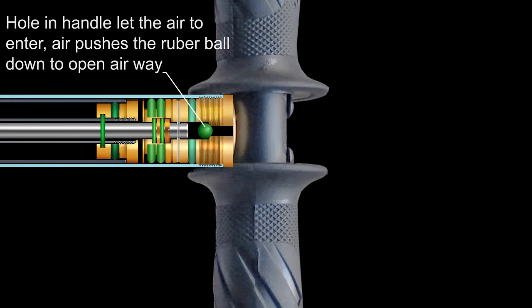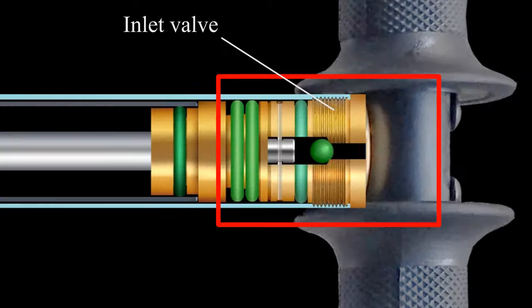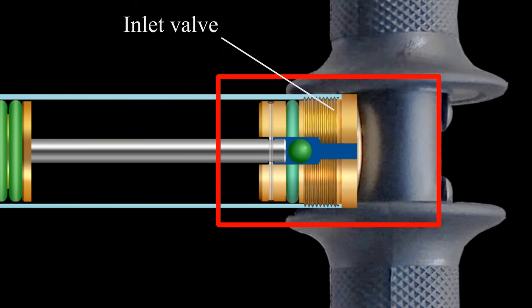When air enters, it pushes the rubber ball down to open the airway. When the handle is pulled, air enters into the first tube through the hole in the handle.